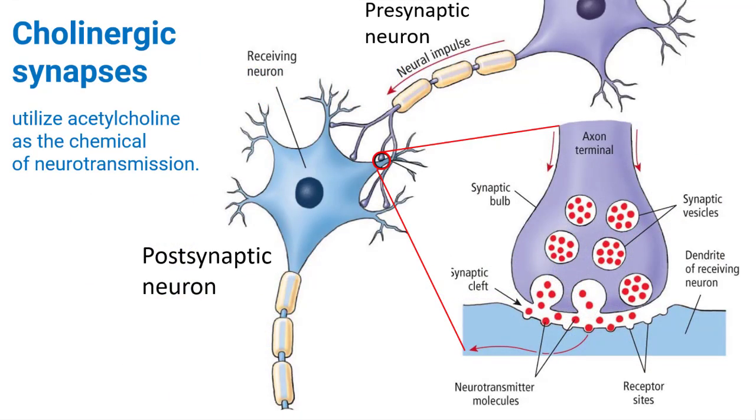Nerves don't actually touch. They do come very close at a structure called a synapse. At rest, a neuron is slightly more negative internally relative to the environment. Some stimulus causes the neuron to reverse its polarity, sending an electrical pulse down the axon.